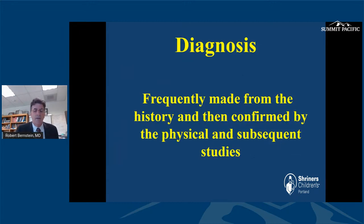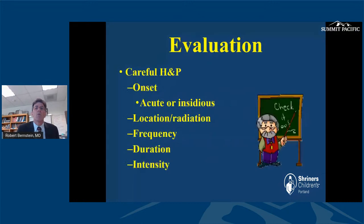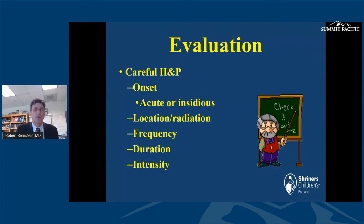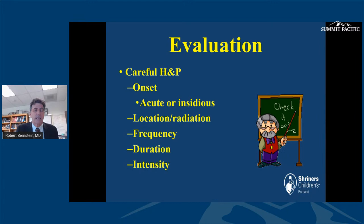The diagnosis is frequently made based on the history, then confirmed with a physical examination and subsequent studies. The history is very important in helping determine the most likely cause of back pain. We look at the onset — did it occur acutely or has it been slowly getting worse? Where is the pain? Does it radiate down the legs? How frequently do they have pain, what is the duration, and how intense is the pain?